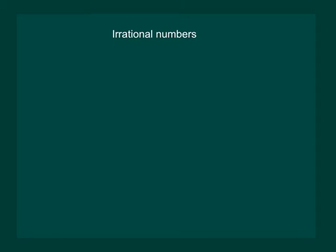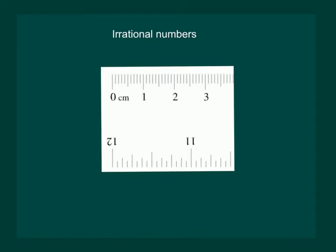It's now time to move on to irrational numbers. Look at the centimeter scale. We have divided each centimeter into 10 equal parts, and we know that we can assign a rational number to each part.